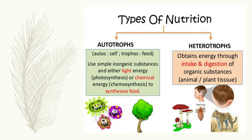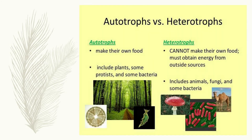Now I think the term autotroph is clear to all of you. All non-green plants and animals that obtain their food from other plants and animals are called heterotrophs. Looking at some differences: autotrophs make their own food by themselves — this includes plants, protists, and some bacteria.